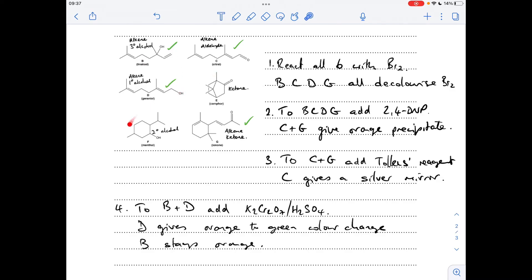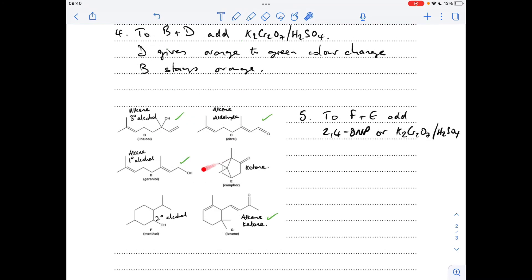So all we've got to do now is distinguish between F and E. There's a couple of ways to distinguish between F and E now. So I've used both of these tests already, but the way I've structured my answer, I'm going to need to bring one of these back. I'll go through both. So you could use 2,4-DNP. So E has that carbonyl group ketone, so you'll get an orange precipitate with E, whereas you won't with F.